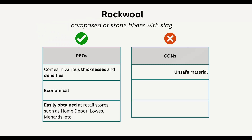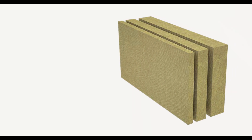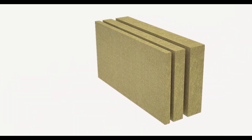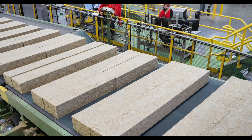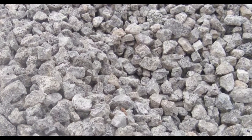Rockwool is composed of stone fibers mixed with a few slag particles. It comes in various thicknesses and densities and is economical and easily obtained — you can also find it at Home Depot, Lowe's, and Menards. The only con is that it's not super safe, though compared to fiberglass it can be more easily managed. The rocks themselves are not harmful since they're natural to the body, but the slag makes it slightly unsafe, as slag contains high levels of lead and arsenic, both harmful to human health. However, our bodies are capable of detoxing arsenic and lead through excretion.